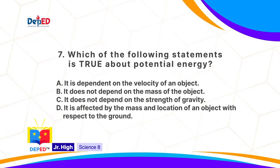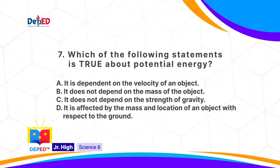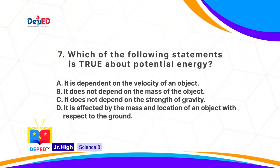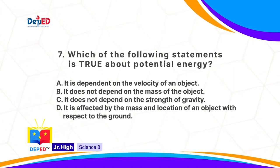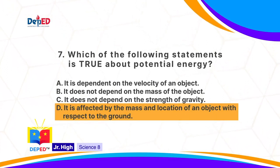What is true about potential energy? A. It is dependent on the velocity of an object. B. It does not depend on the mass of the object. C. It does not depend on the strength of gravity. Or D. It is affected by the mass and location of an object with respect to the ground. The correct answer is D: it is affected by the mass and location of an object with respect to the ground.